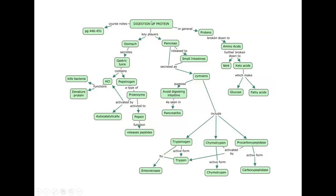Ringkasan digesti protein: peran kunci ada di lambung dan enzim dari pankreas. Di lambung, gastric juice mengandung HCl dan pepsinogen. HCl berfungsi mendenaturasi protein, membunuh bakteri, dan membantu penyerapan zat besi dan vitamin. Pepsinogen (bentuk inaktif) diaktifkan oleh HCl menjadi pepsin, dan pepsin bisa mengaktifkan pepsinogen lagi. Di pankreas, getah disekresikan menuju usus halus sebagai zimogen, di mana tripsin (setelah diaktifkan) akan mengaktifkan kimotripsin, karboksipeptidase, dan enzim lainnya.